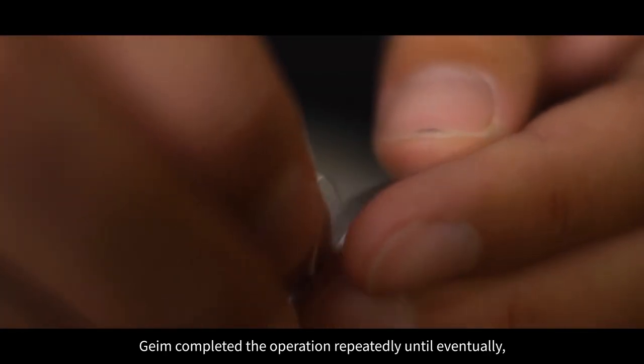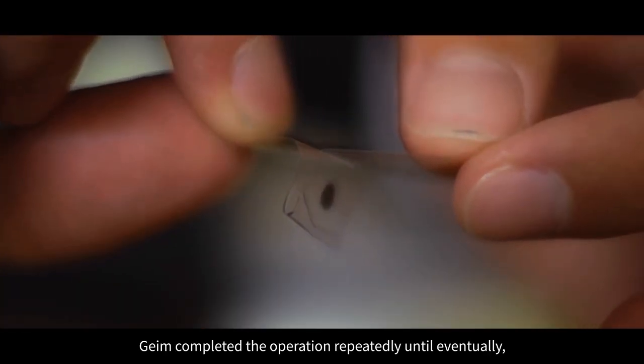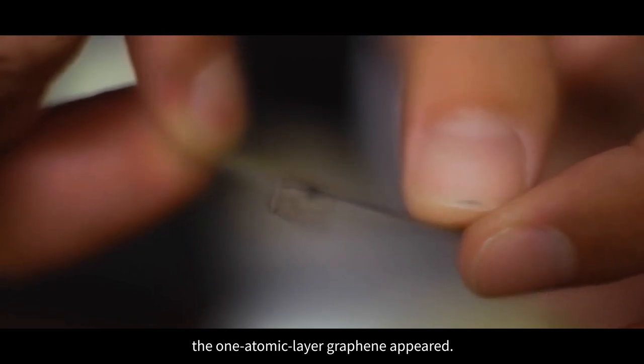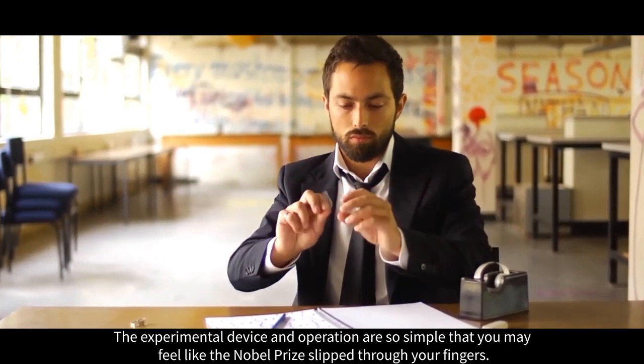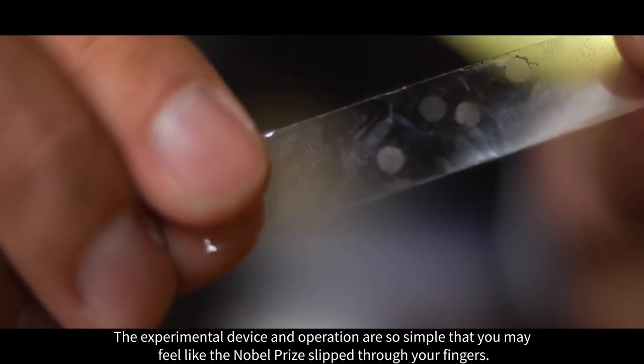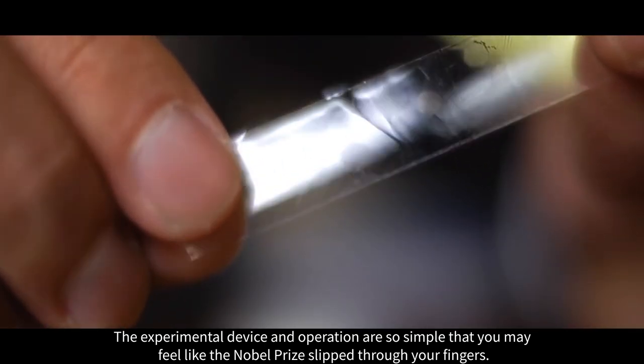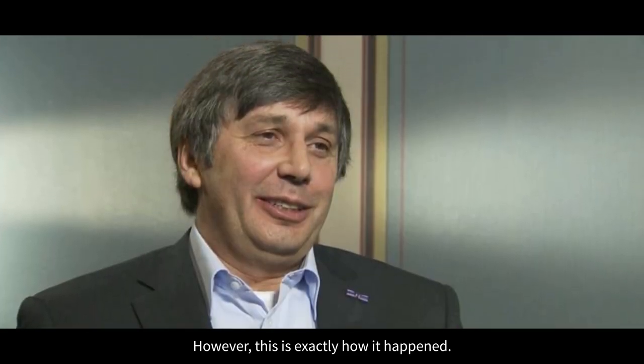Geim completed the operation repeatedly until eventually the one atomic layer graphene appeared. The experimental device and operation are so simple that you may feel like the Nobel Prize slipped through your fingers. However, this is exactly how it happened.